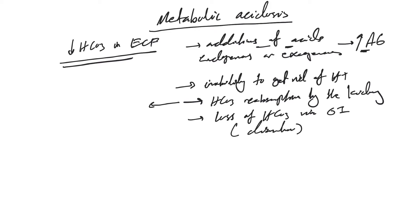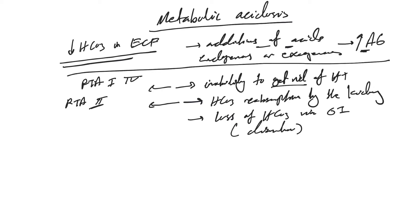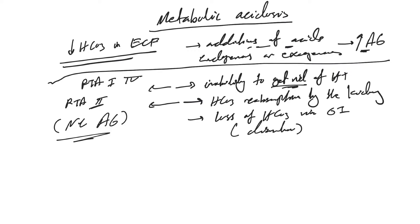A big example of bicarb loss through the kidney is RTA type 2, the proximal tubule. Inability to secrete or get rid of hydrogen ion gives you RTA type 1 and type 4. So inability for the kidney to keep bicarb, or loss of bicarb whether renally or extrarenally, and inability to get rid of hydrogen ion, all leads to normal anion gap metabolic acidosis.